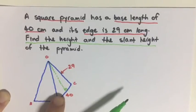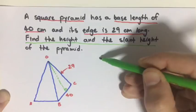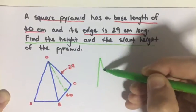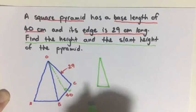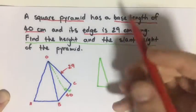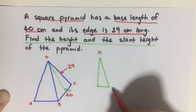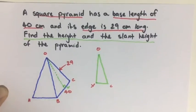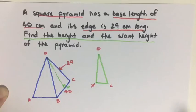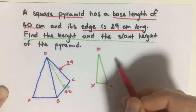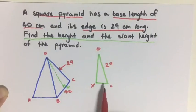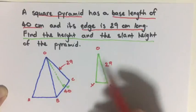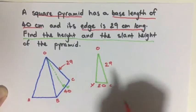Well, if we look at our face we know that we have a right triangle. Let's label this X. So we have O, C, and X. Well, based on what we know, we know our hypotenuse here is 29. We know our base is half of our pyramid base. So that's going to be 20.